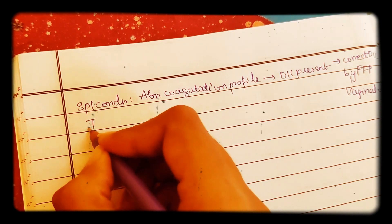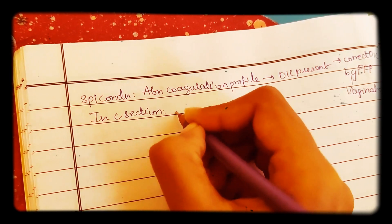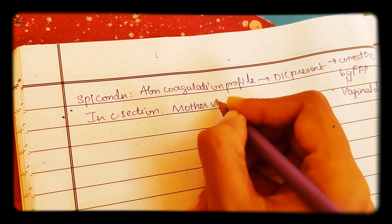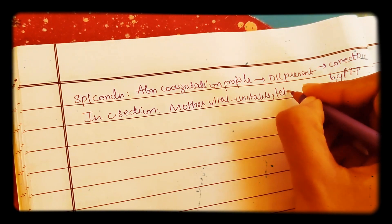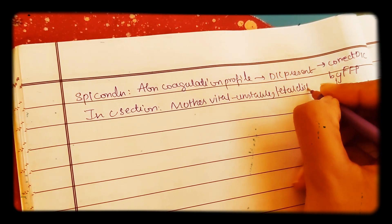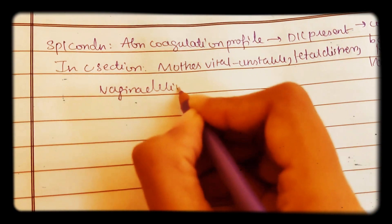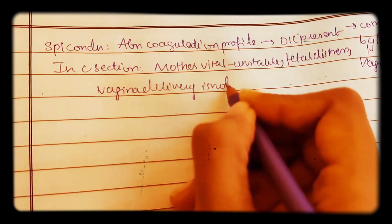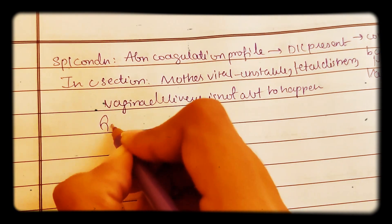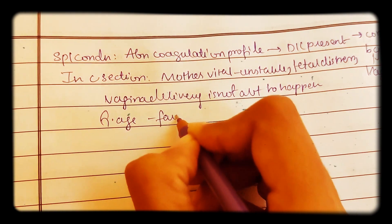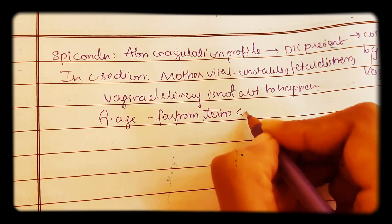Indications for c-section in abruptio placenta: mother's vitals are unstable, fetal distress is present, vaginal delivery is not about to happen, or gestational age is far from term such as less than 32 weeks.